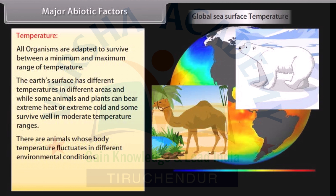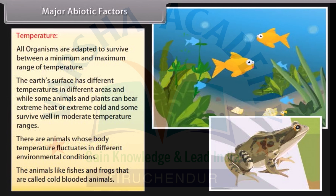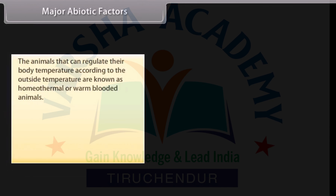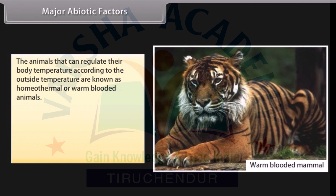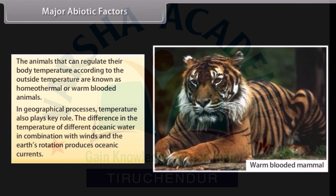There are animals whose body temperature fluctuates with different environmental conditions. Animals like fishes and frogs are cold-blooded animals. Animals that can regulate their body temperature according to the outside temperature are known as homeothermal or warm-blooded animals. In geographical processes, temperature also plays a key role — the difference in temperature of different oceanic waters in combination with winds and the earth's rotation produces oceanic currents.